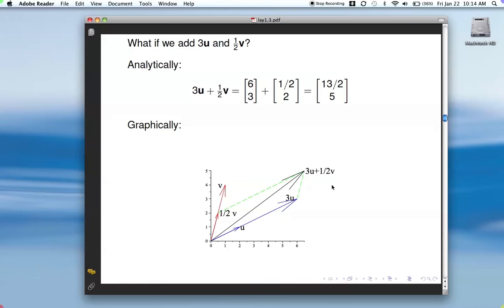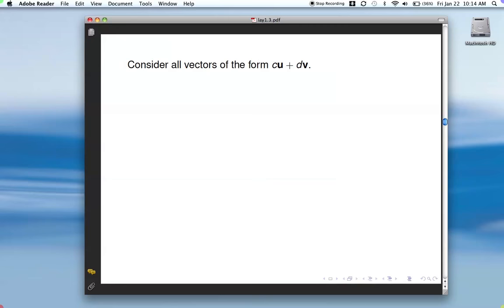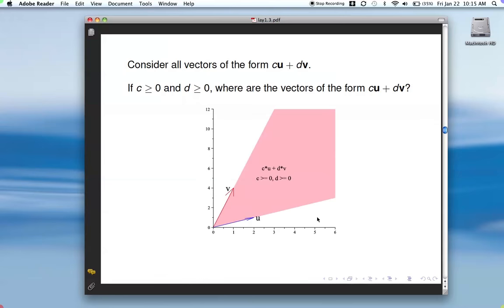So notice that you can scale u to whatever length you want. You can scale v to whatever length you want, and then add those two vectors together. And if you do that, then think about where the vectors would end up. Any vectors that you can scale u however you want, scale v however you want, and then add them together. This would be any multiple of u, any multiple of v. And for the moment, let's restrict our attention to positive multiples or non-negative multiples. So let's assume that c and d are both non-negative.